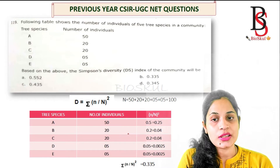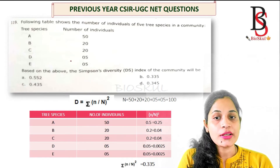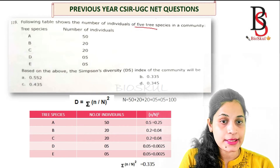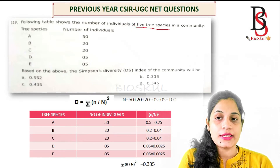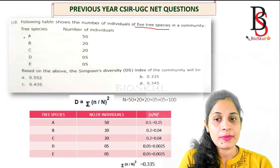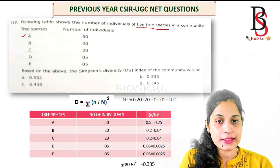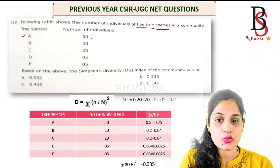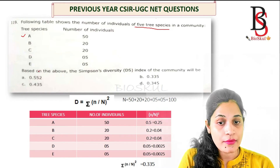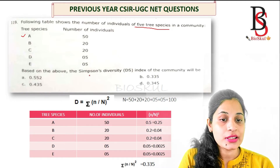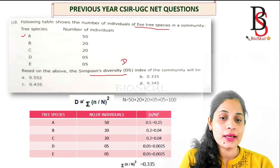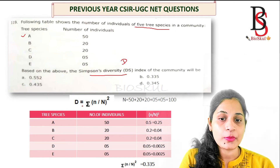The question states: a table shows the number of individuals of five tree species in a community. There are five tree species present and the number of individuals for each species is given. Based on this, the Simpson's Diversity Index D of the community is to be calculated. The formula is D = Σ(n/N)².